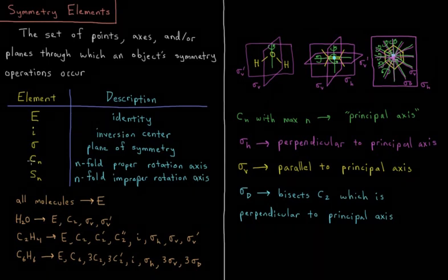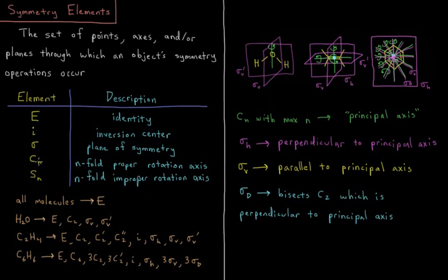The label n here means that the rotation part occurs over a 360 divided by n degree rotation. So C2 is 180 degrees, C3 is 120 degrees, C4 is 90, etc.